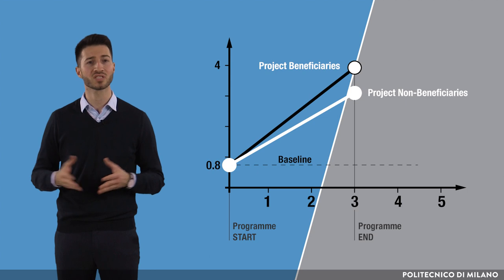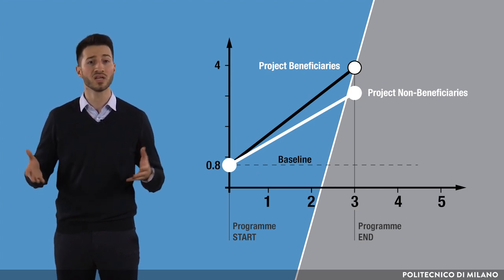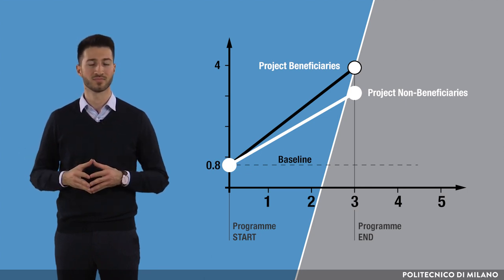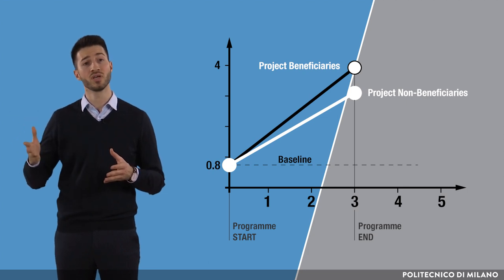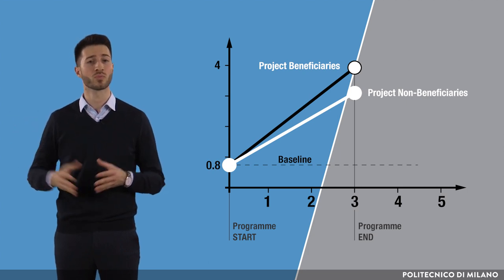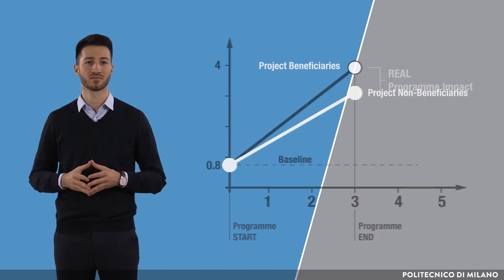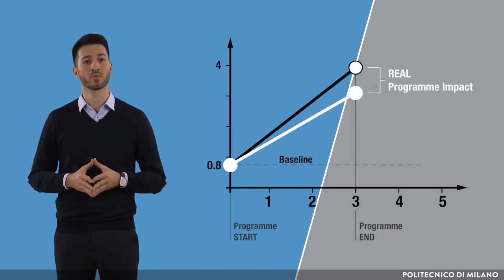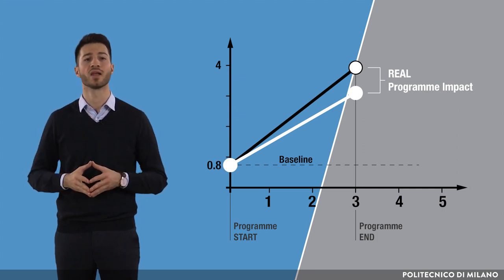For example, this might happen due to the decrease in the price of patent filing or a general technological breakthrough, like the one that happened with the diffusion of the internet. Thus, only a part of the impact appears to be contributed by the focal program, and the rest would have happened in any case. Only by establishing this new, real impact of the program are we able to reliably evaluate its true value.